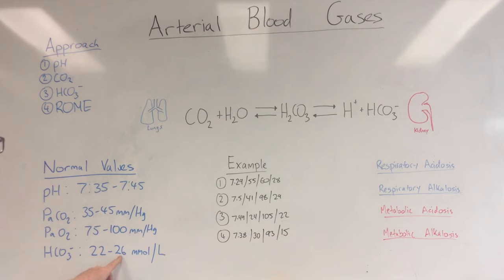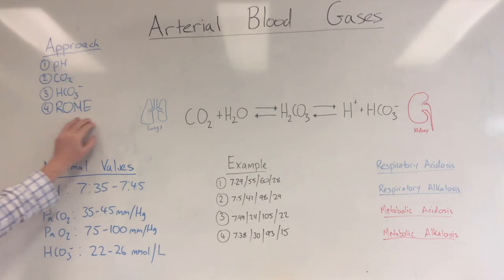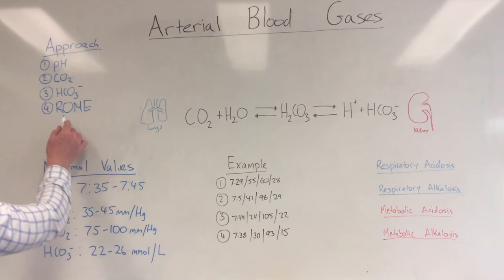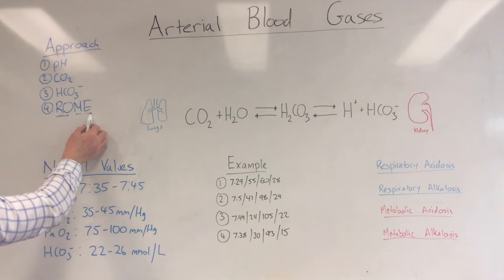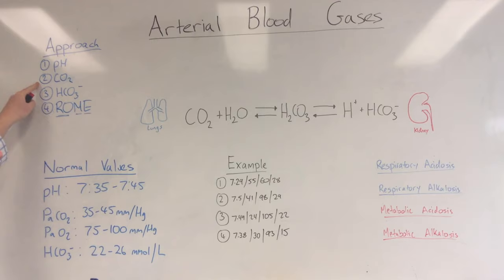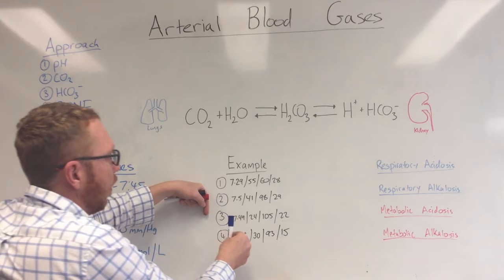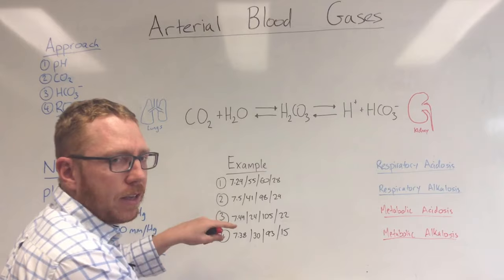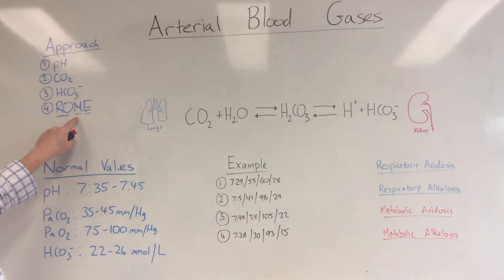Finally, step four uses the acronym ROME — just like the city in Italy. RO stands for Respiratory Opposite, ME stands for Metabolic Equal. If it's a respiratory-caused issue, the pH and CO2 will go in opposite directions — if the pH goes down, the CO2 will go up. If it's a metabolic issue, the pH and bicarbonate will go in the same direction — if the pH goes down, the bicarbonate will go down.